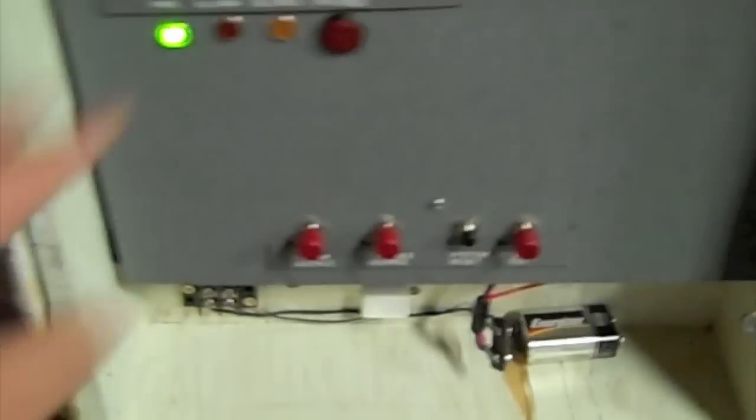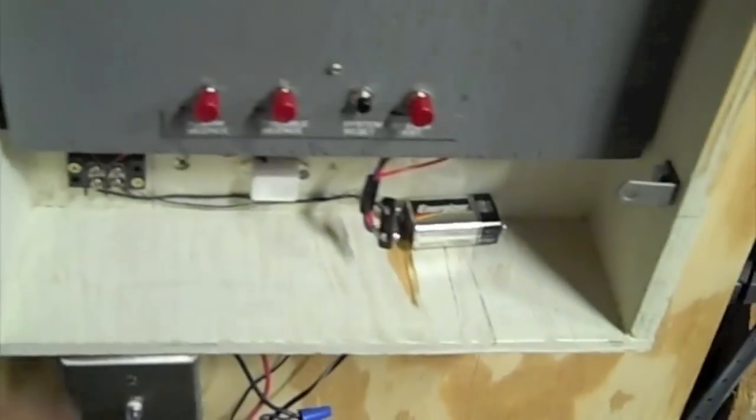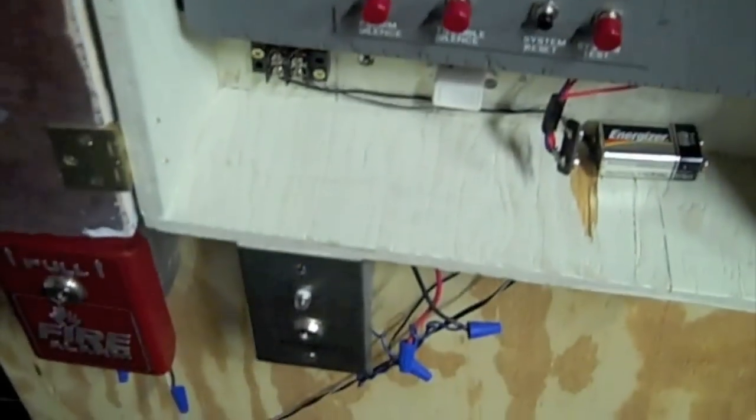This whole part is removable. I can unscrew this and take it out, and you can rewire it and stuff. Three terminals: strobe, horn, and pulsation. Down here you got your regular power and the piezo.